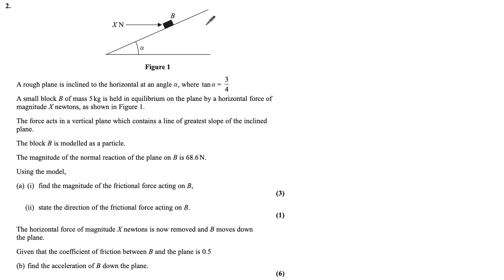Question 2. A rough plane is inclined to the horizontal at angle alpha, where tan alpha is 3 quarters. A small block B of mass 5kg is held in equilibrium on the plane by a horizontal force of magnitude X newtons, as shown in figure 1. The force acts in a vertical plane which contains a line of greatest slope of the inclined plane. The block B is modelled as a particle, and the magnitude of the normal reaction of the plane on B is 68.6 newtons.